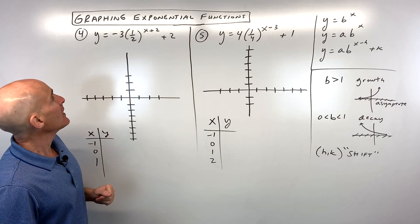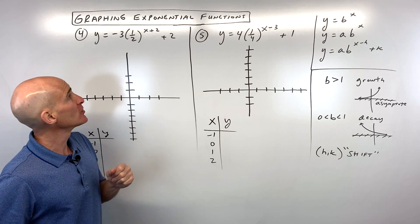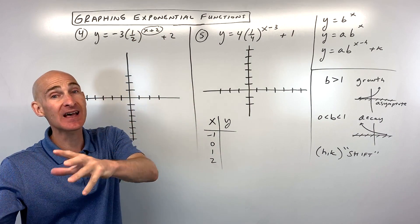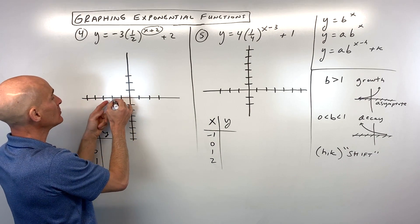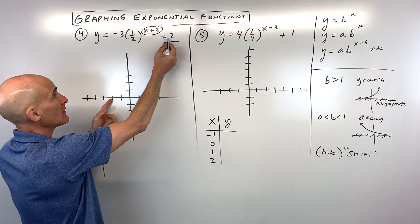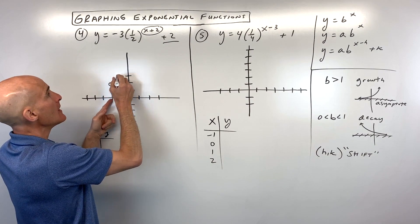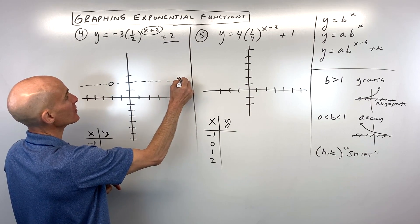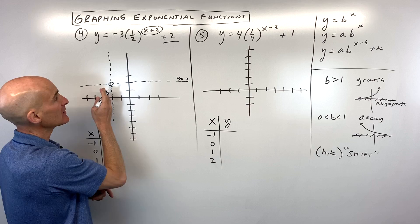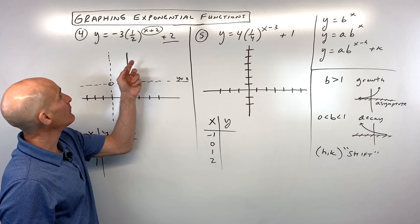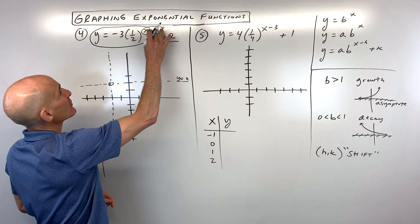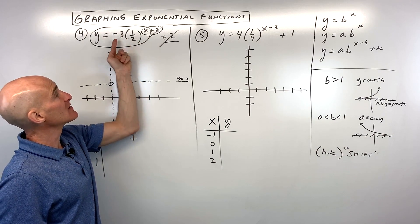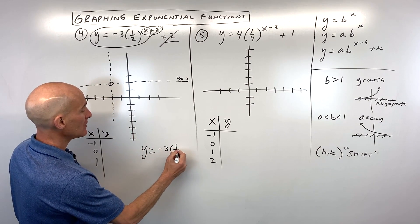For number four, the first thing I do is look at the shift. The plus two grouped with x has the opposite effect — it's actually going left two. The plus two outside is a vertical translation up two. Opposite direction for x, same direction for k. I draw in the asymptote, the line y equals two, and optionally a dashed vertical line as a new y-axis. Then I focus on the parent function y equals negative three times one-half to the x.